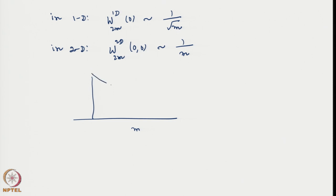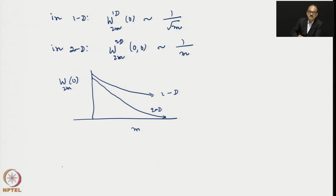One can actually plot this behavior as a function of m for 1D and 2D. There will be far more rapid decay of the probabilities of finding the particle at the starting point at the origin in 2D compared to 1D. In fact, these probabilities will decay even faster at higher dimensions.